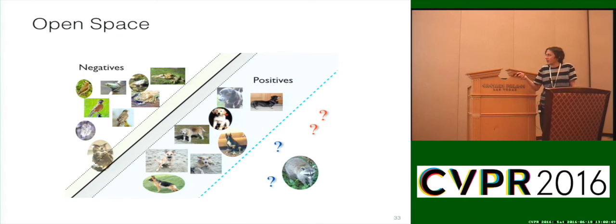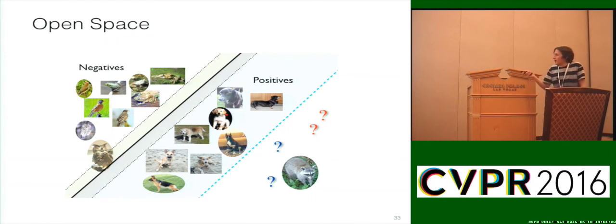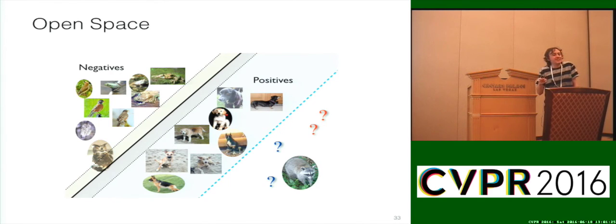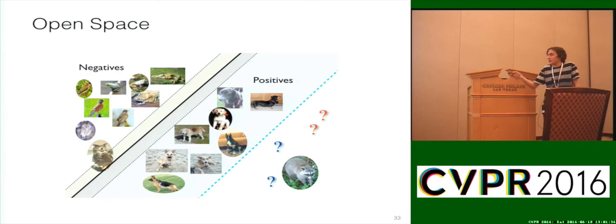An alternative is to reformulate the problem and incorporate a notion of open space risk — instead of just minimizing empirical loss multiplied by the joint distribution, we want to minimize the risk of having all that open space extending to infinity. We define open space risk as the relative measure of open space to the full space of the learned classifier. Open space plus the positive training examples becomes the full space, representing a region of fairly high confidence for assigning labels.